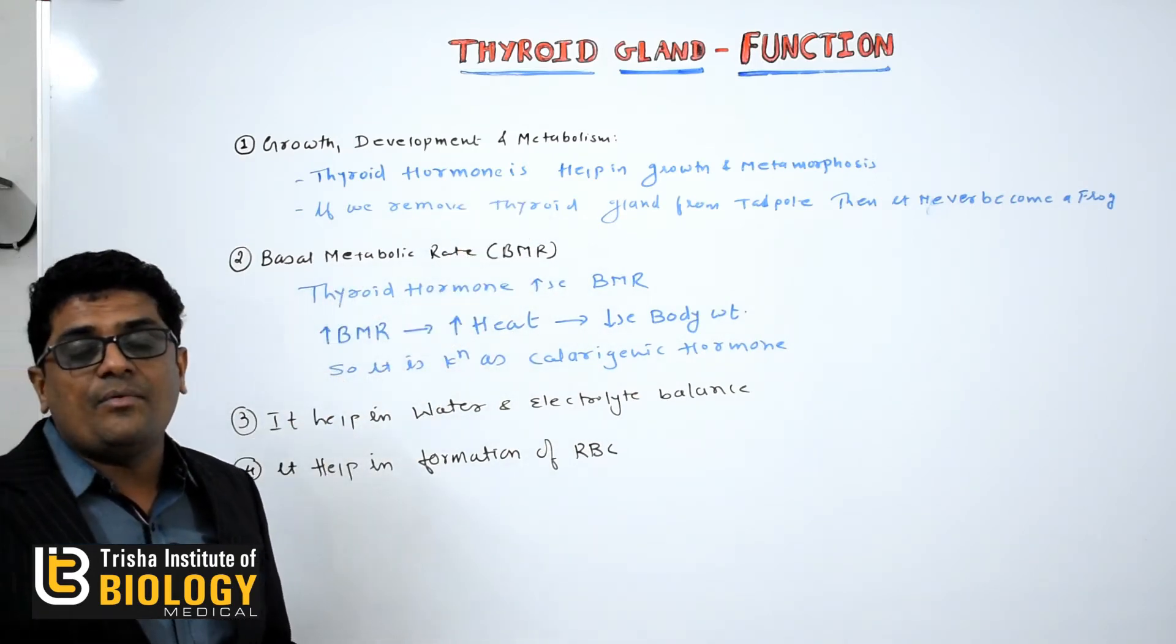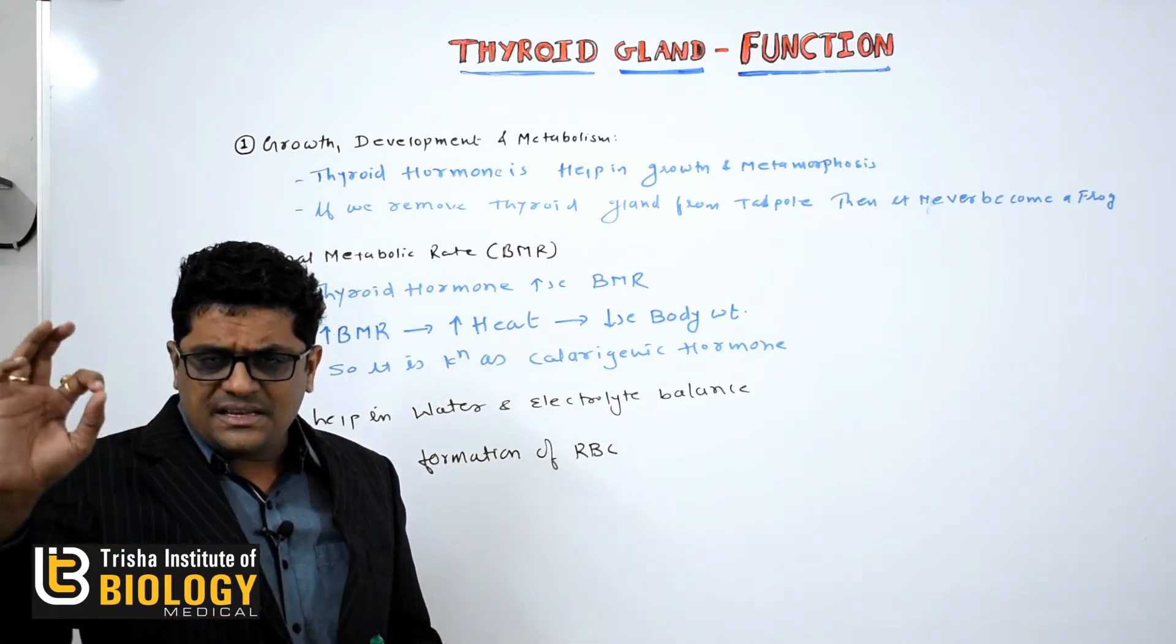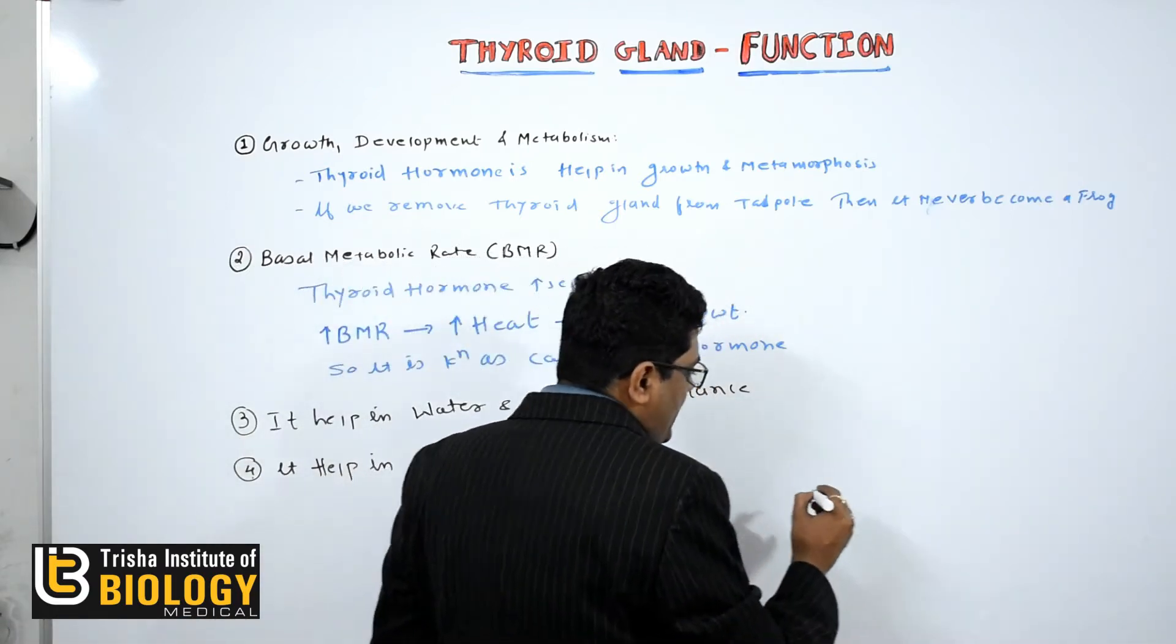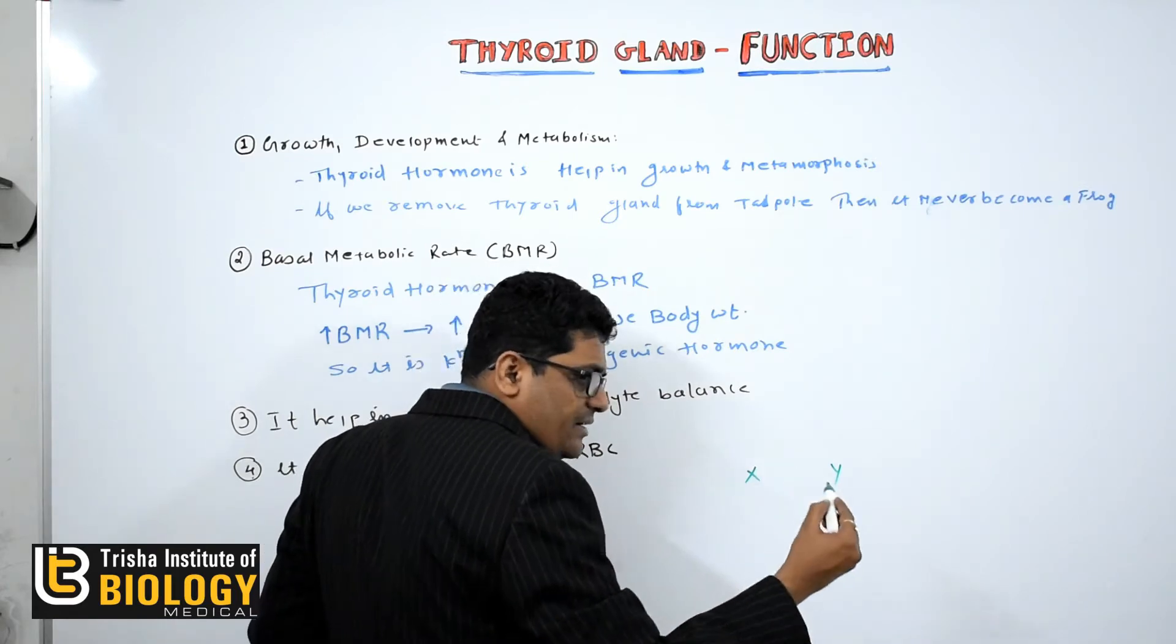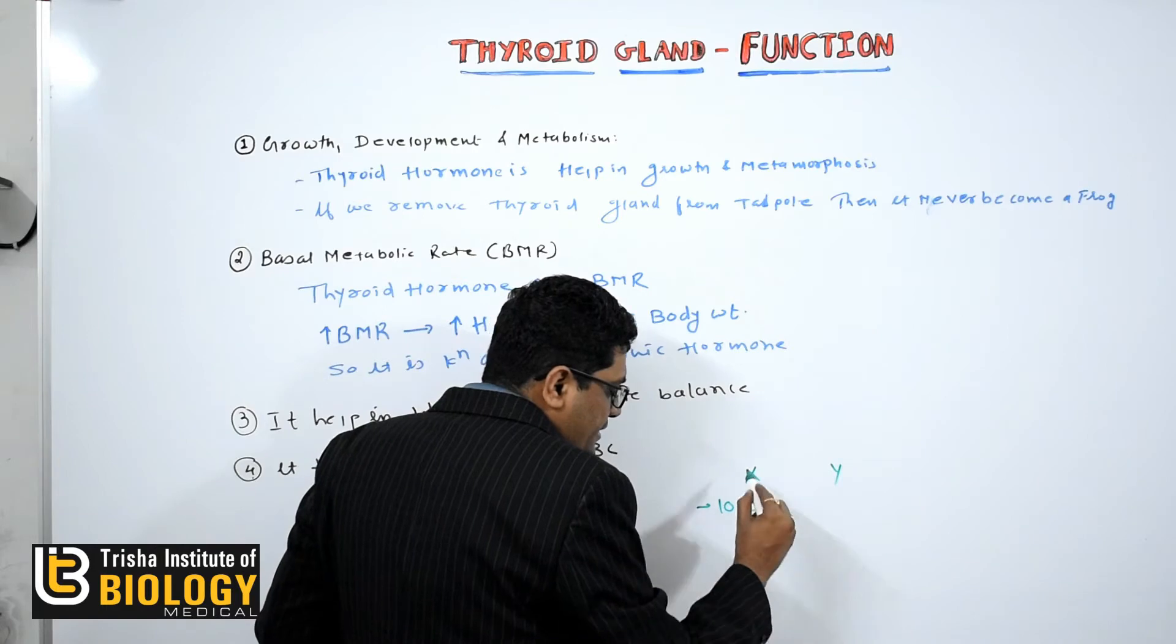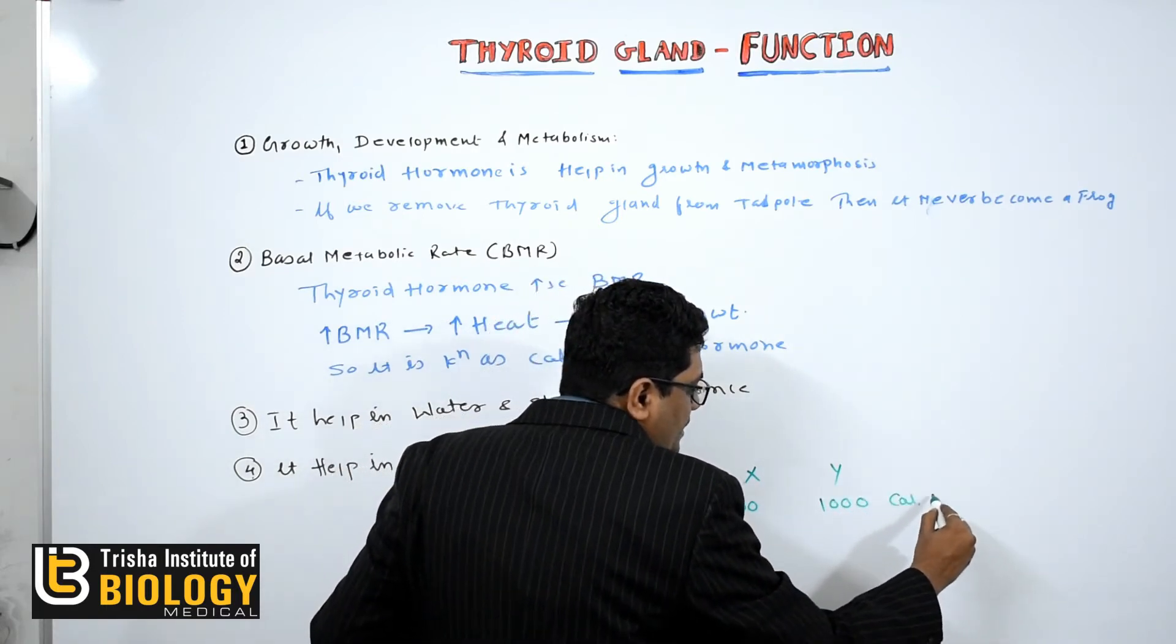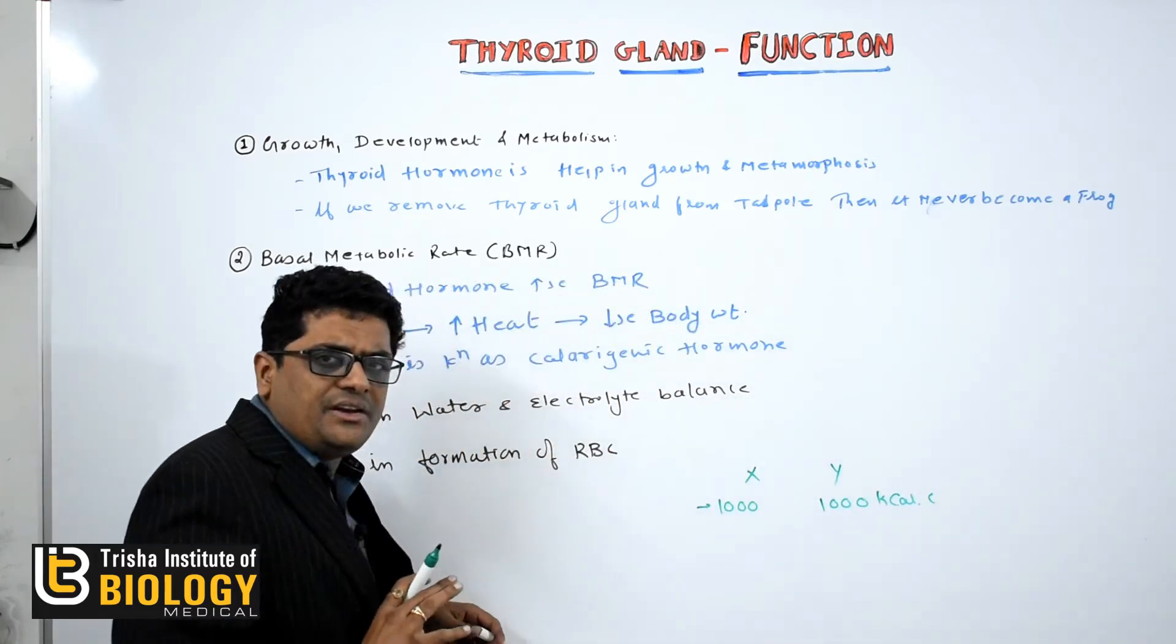Second, it increases the basal metabolic rate. Now what is basal metabolic rate? For an example, suppose X and Y. There are two persons. Both are on regular routine diet. They take one thousand kilocalories daily. Same amount of calories daily.